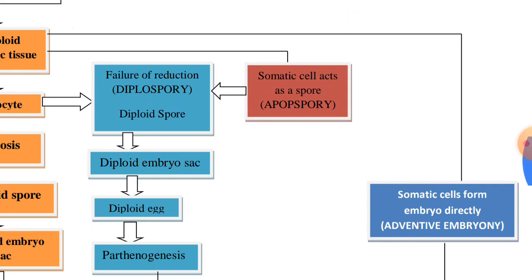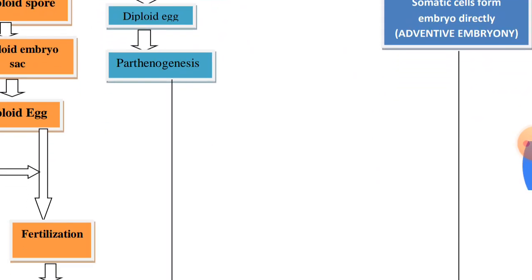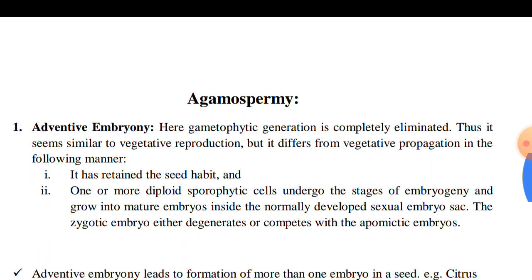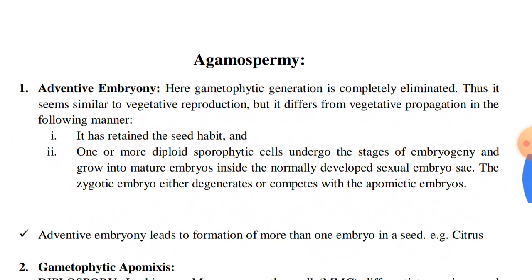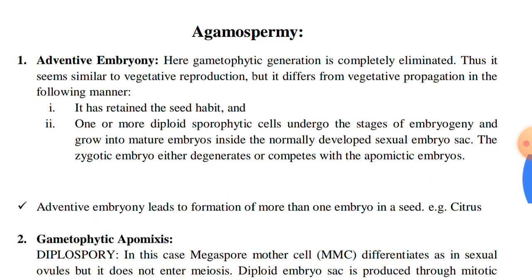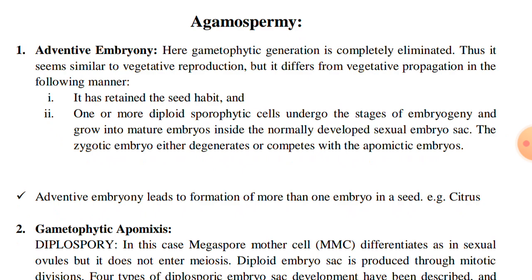In the third category, which is known as adventitious embryony, the somatic cells directly form the embryo. And as the somatic cells have a diploid set of chromosomes, the embryo formed from the somatic cells by the process of adventitious embryony is diploid.